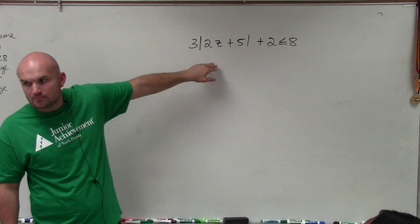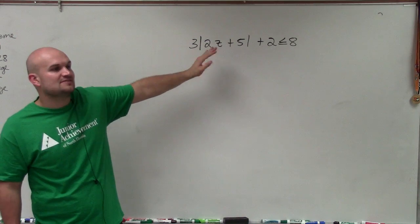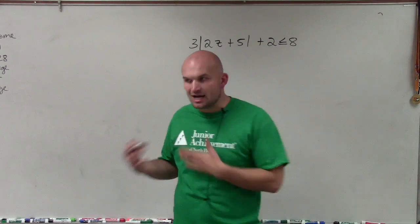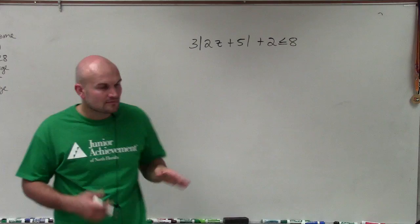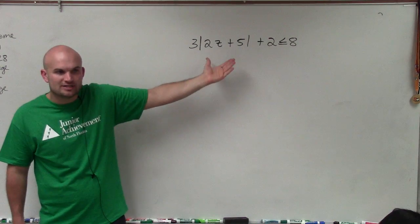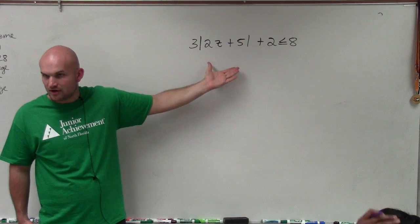This has been one of the most common mistakes that I've seen as I've been checking students' work from solving absolute value equations. They're not isolating the absolute value equation. So you have to make sure you isolate, undo the operations that are happening to the absolute value sign first of all.